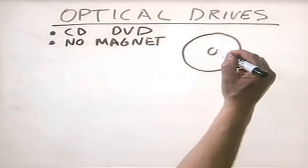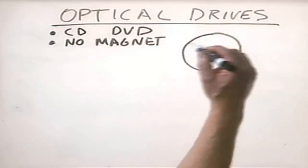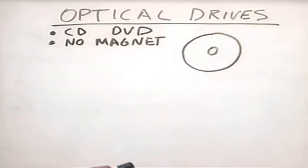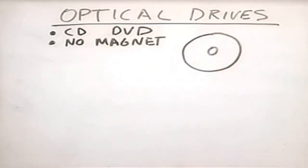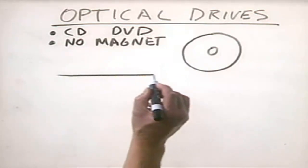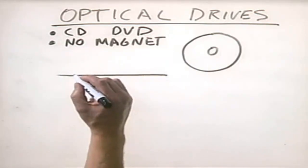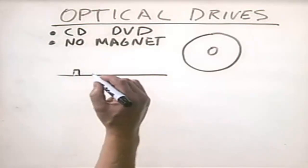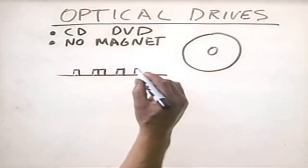Optical drives do not use magnetism. Instead, they use light impulses to encode zeros and ones. If you look at the bottom of a CD or DVD and hold it to the light, you'll see a rainbow effect — that's caused by the encoding on the bottom of the disk used to store binary data. If we were to look at this disk edge-on with a very powerful microscope, actually looking at the surface, you'd see things that look like this.